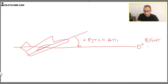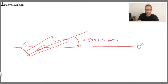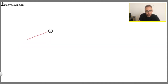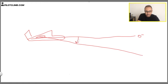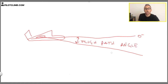The flight path angle is the actual trajectory of the airplane compared to the horizon. If an aircraft flies at a certain attitude but along the horizon line, it has a zero flight path angle. So this aircraft has to maintain a positive pitch attitude in order to fly straight and level, but it has a zero flight path angle.